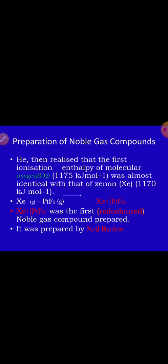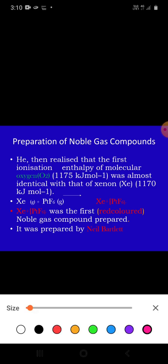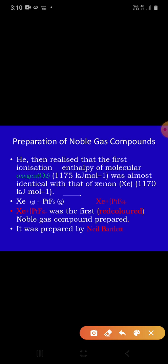After watching this red color compound, Neil Bartlett thought and he just realized that if oxygen can form a compound with PtF6, why couldn't noble gases like xenon be? He then realized and how he realized, on the basis of what factor he realized. He realized that the first ionization enthalpy of molecular oxygen is 1175 kJ per mole and was almost identical with that of the xenon, which was 1170 kJ per mole, which is even less than oxygen.